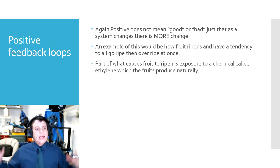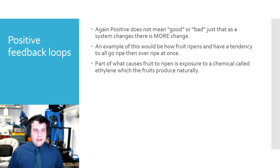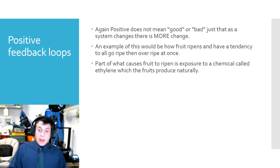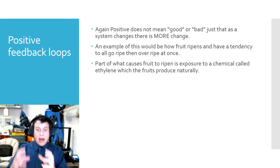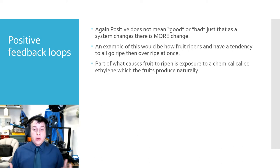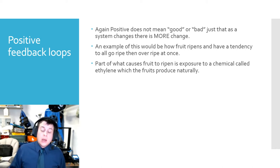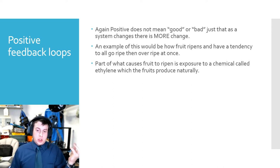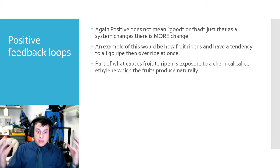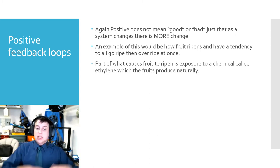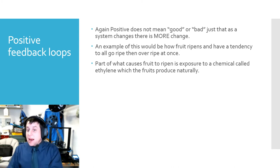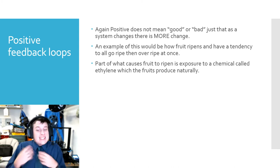The example I like for this is how fruit ripens. Part of what causes fruit to ripen is exposure to a chemical called ethylene. It's something a fruit will produce naturally, but when exposed to ethylene, fruits will ripen. So this creates a positive feedback loop. If you've ever had a bunch of bananas or an apple, or maybe you've heard the expression 'one bad apple can spoil the bunch' — this is actually where it comes from. The plant has a mechanism so that when one fruit starts to ripen, it ensures all the other fruits are ripe as well, attracting animals to eat them and carry the seeds somewhere else. That's really what fruit is for.